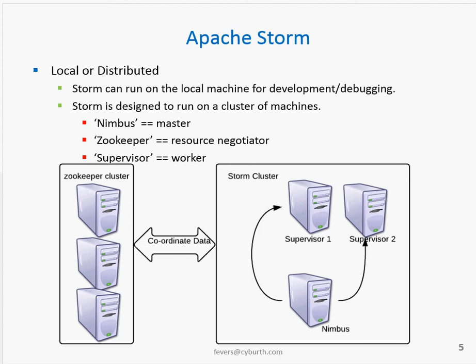A master in STORM is called the Nimbus and the slave is called a supervisor. The resource negotiator is Apache Zookeeper, which keeps track of what jobs have been distributed, handles the distribution of data across the cluster, and makes sure that all processing completion has been communicated back to the master node. If there's a failure, it will indicate that and restart the job again. If the Nimbus fails, the job can continue to run because all of the information related to it is maintained in the Zookeeper cluster.